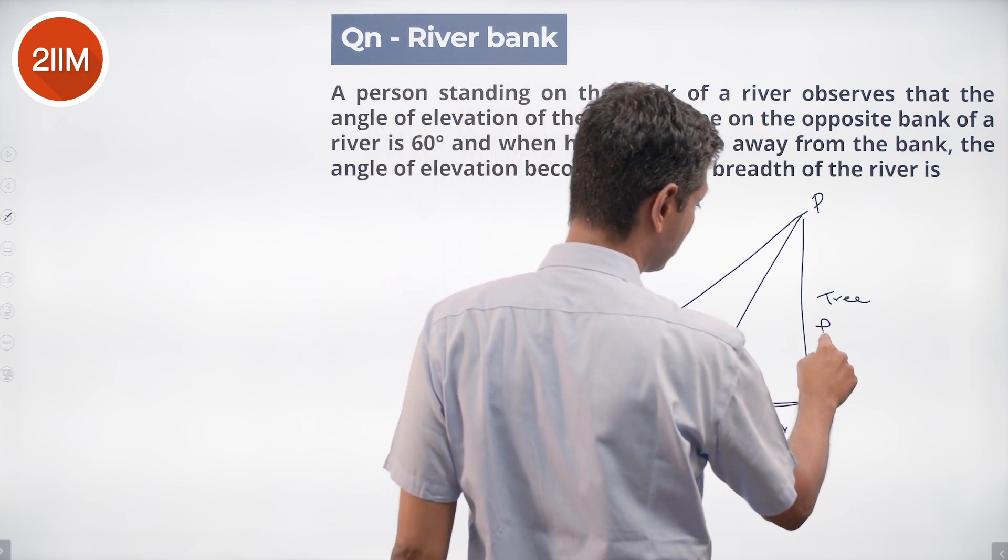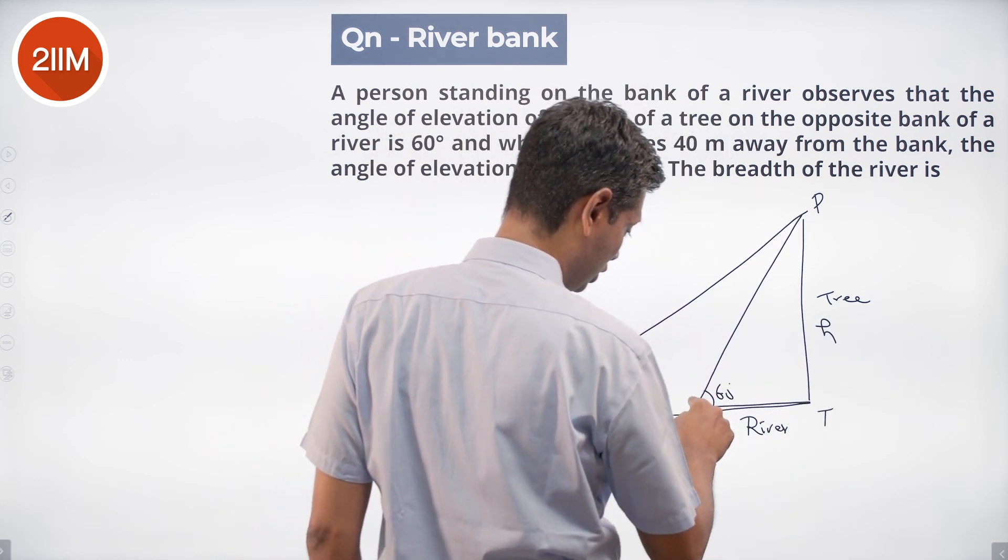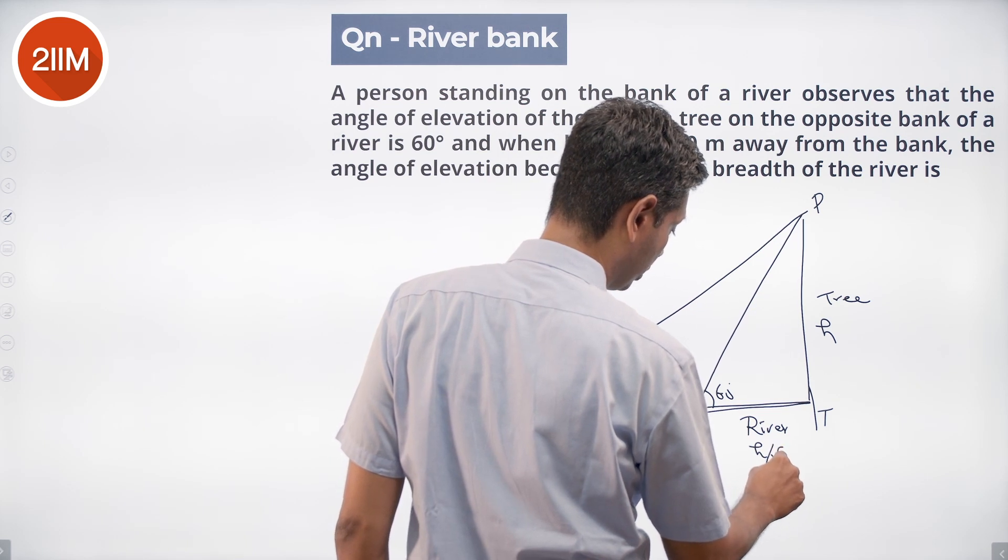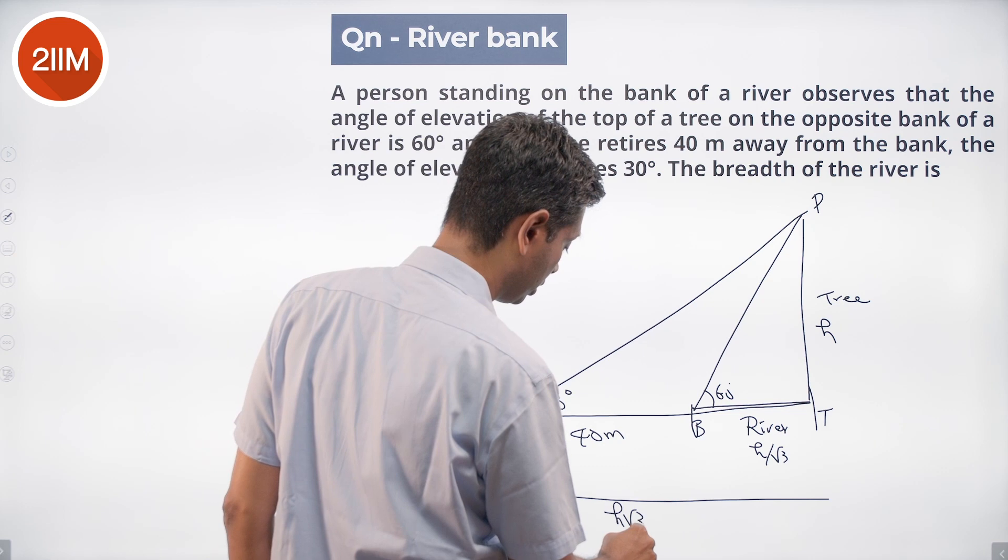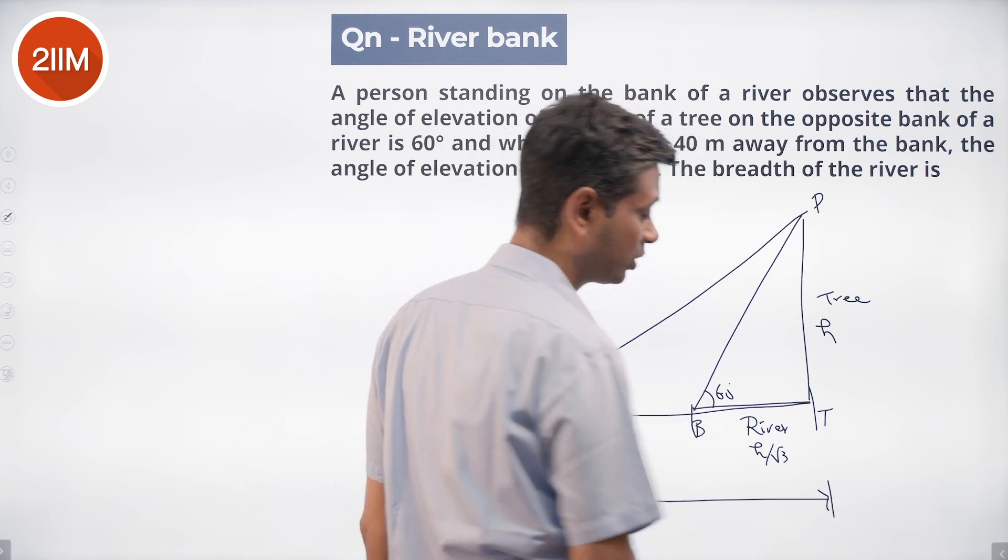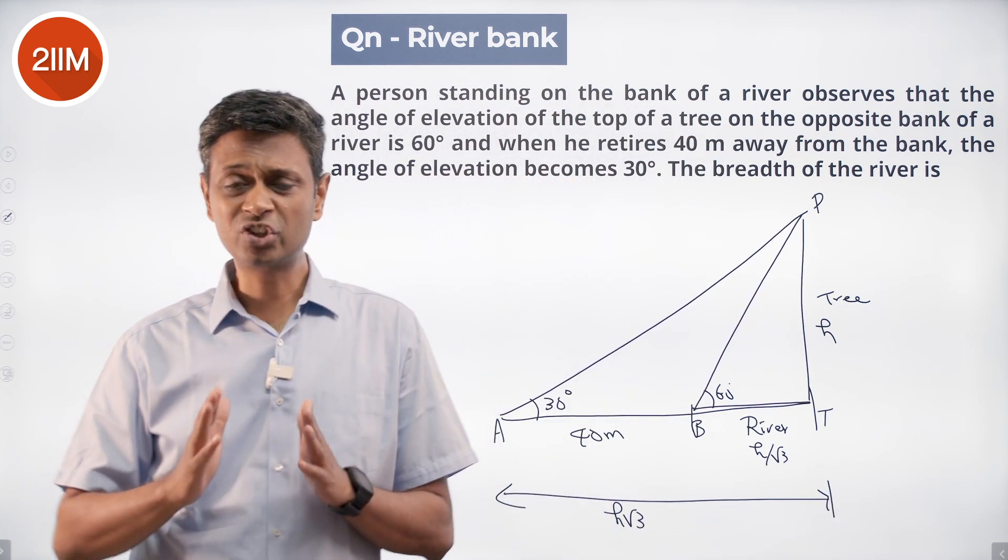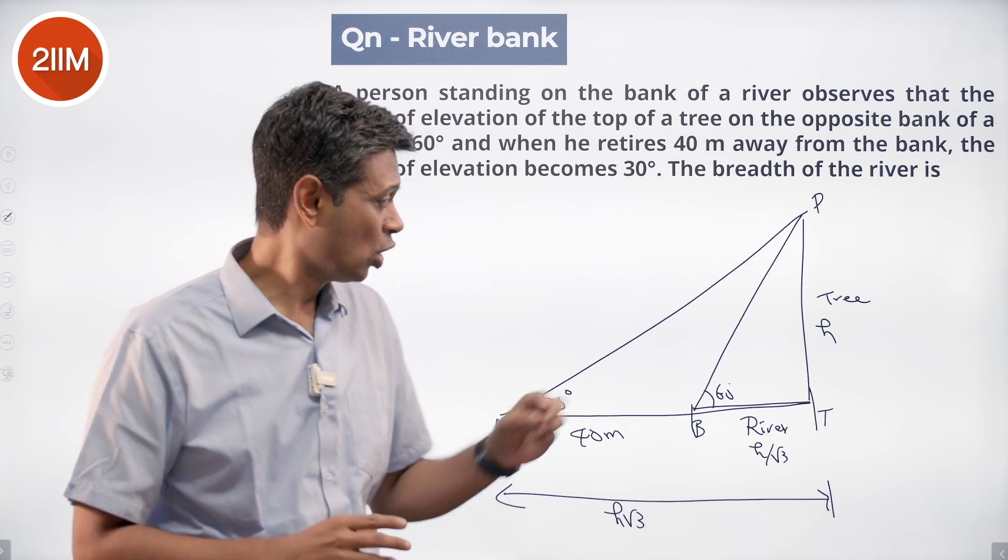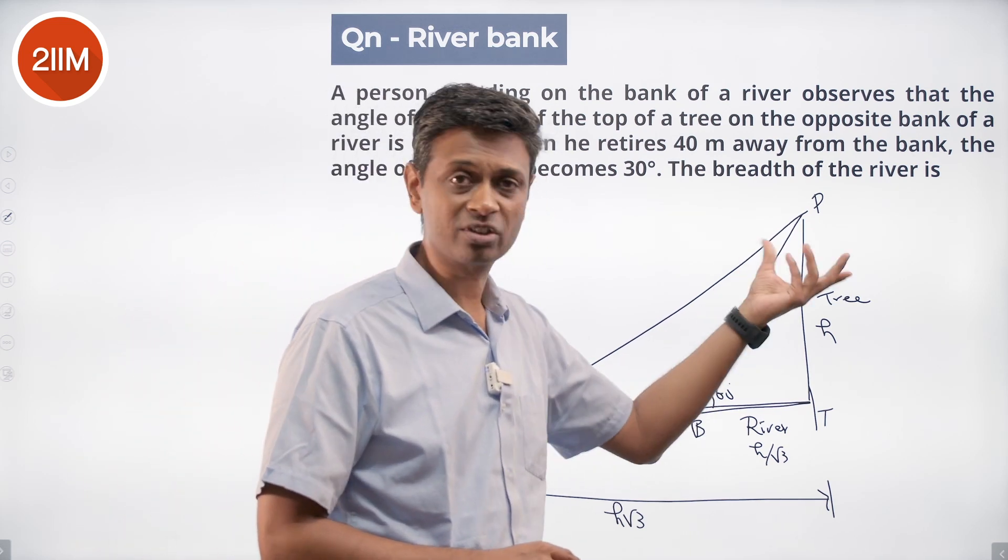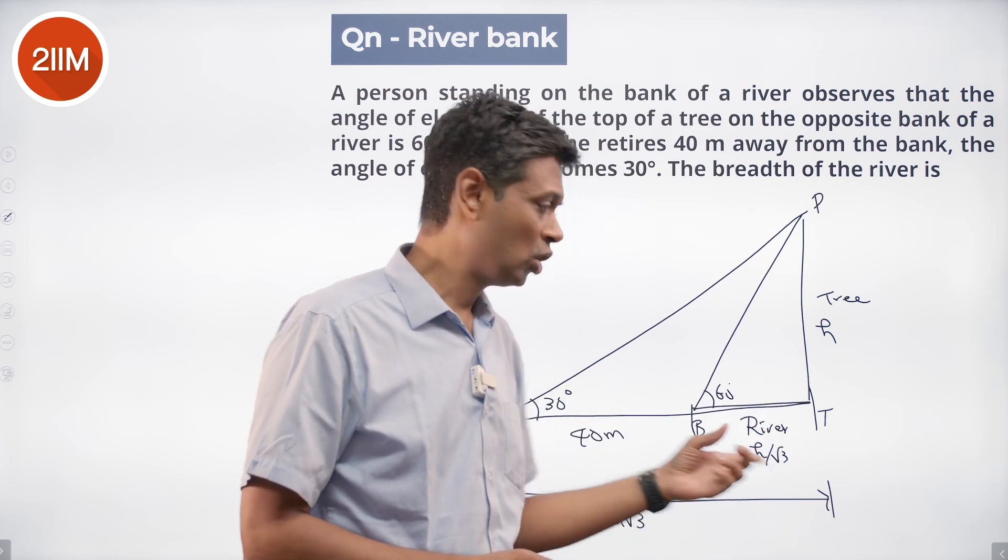Then this is 60, BT should be H by root 3, this should be H root 3. Same funda that in the 30-60-90 degree angle, tan 60 is root 3, tan 30 is 1 by root 3. Opposite 60 degree angle is the larger side, it should be H by root 3, opposite 30 degree angle is the shorter side, it should be H into root 3.